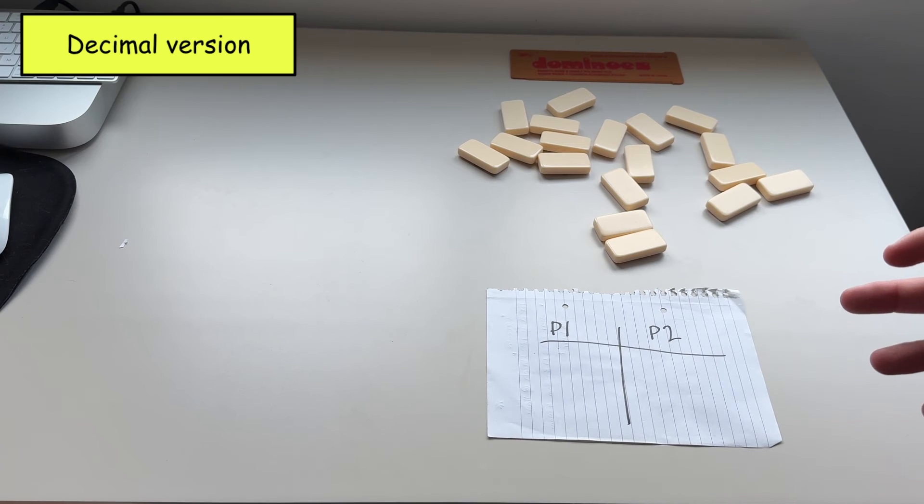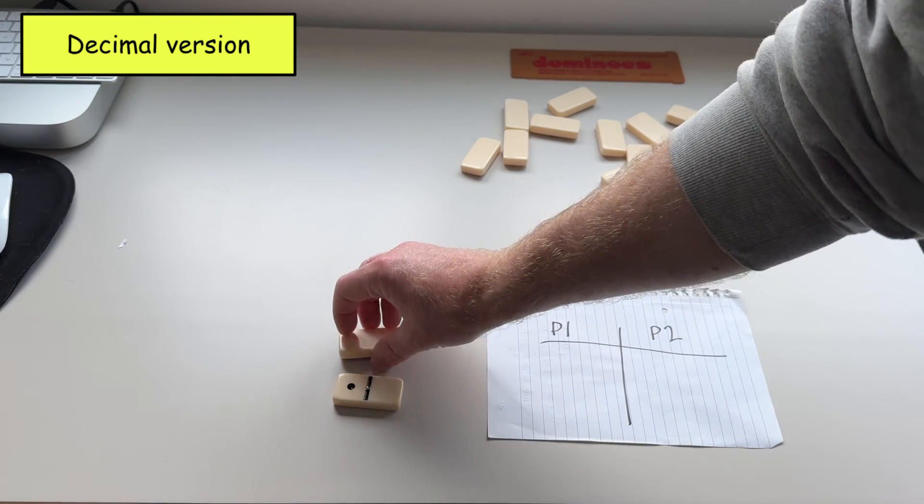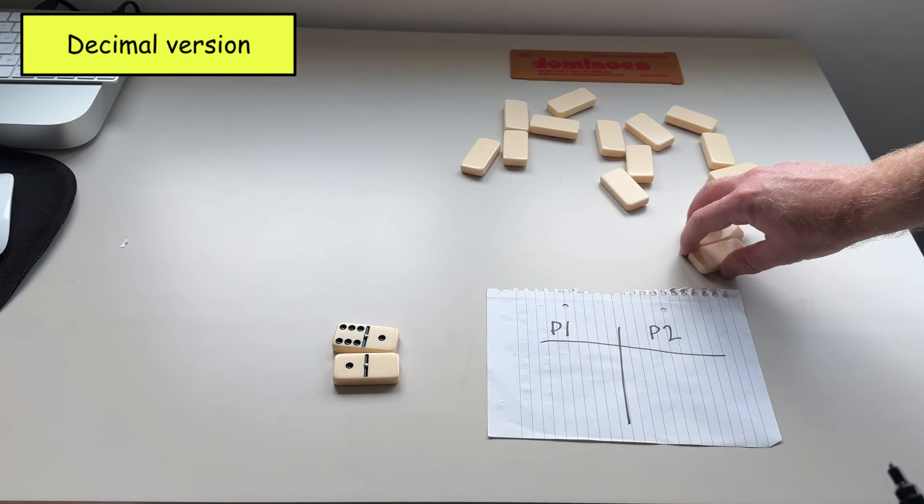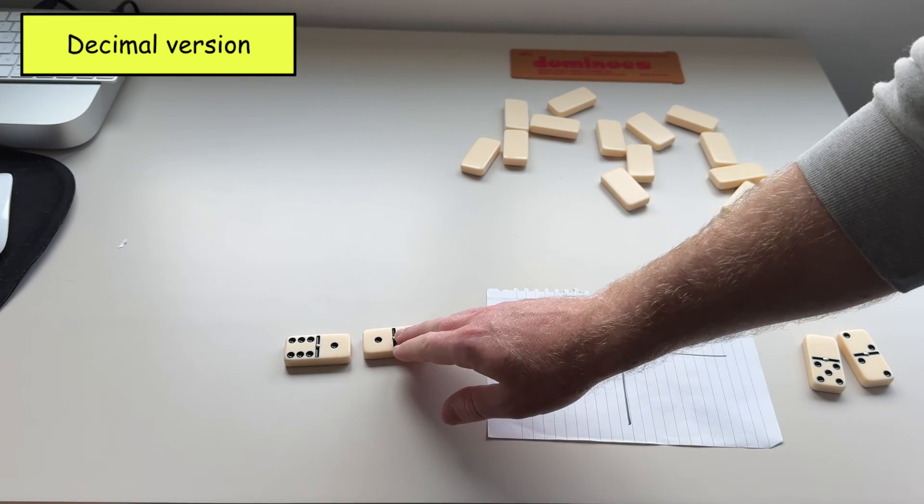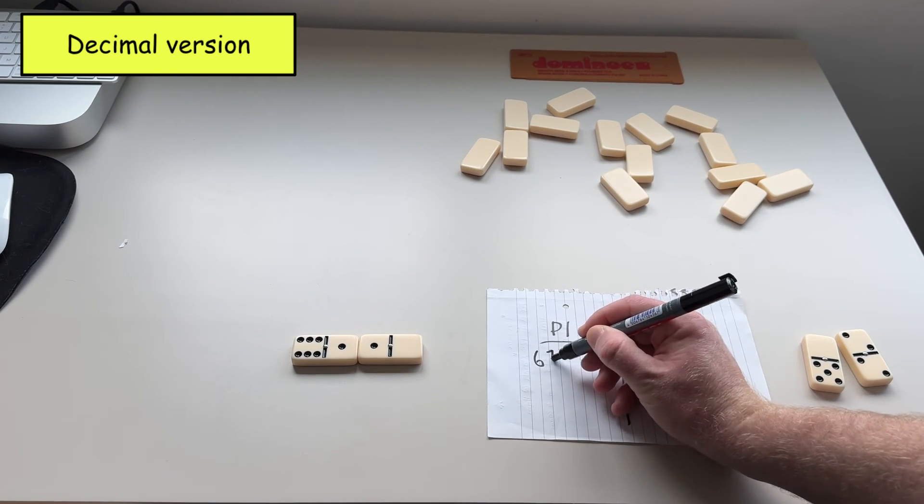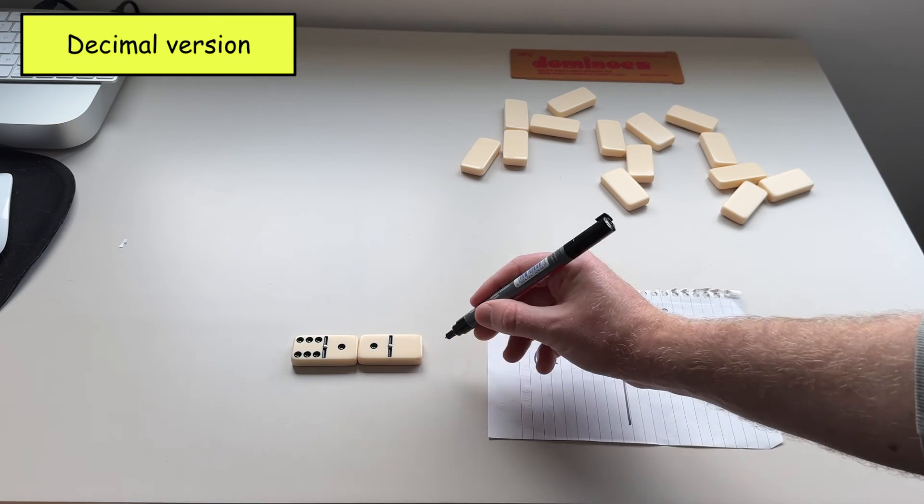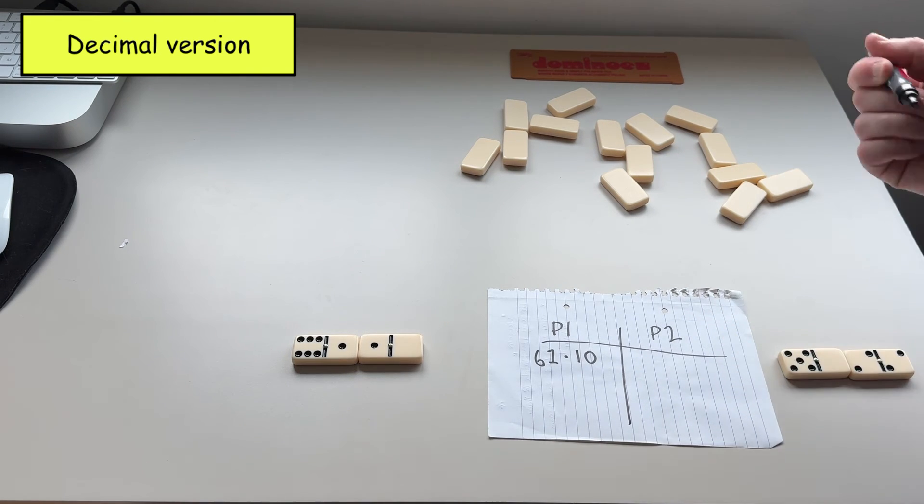So the final way that this game can be played is by introducing decimals. So again the game starts the same where the player will turn over two dominoes each. Again this will be done in secret, they will try and make the highest number that they can. So player one here has a number of 61 decimal point 10. So they have 61.10. Player two here has 50.22.